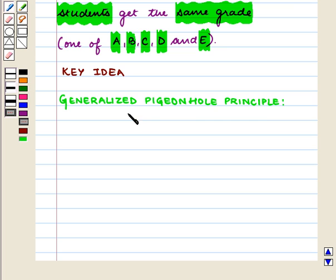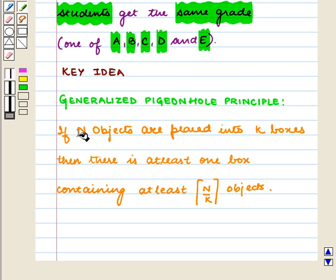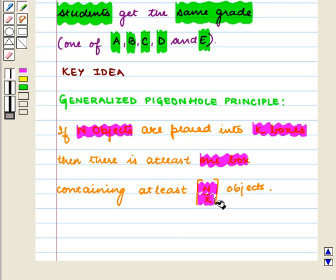We know that the Generalized Pigeonhole Principle states that if n objects are placed in k boxes, then there is at least one box containing at least the smallest integer greater than or equal to n by k objects. With this key idea,